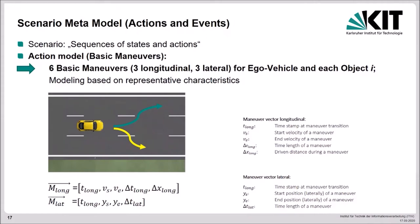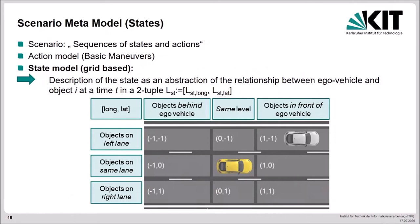In the past, many researchers have worked on modeling driving maneuvers. Based on polynomial models, the description is implemented using representative characteristics. The corresponding quantities such as start and end velocities of a maneuver are aggregated in a vector. Different actions or maneuvers in a scenario might lead to different states. States in a scenario context are more or less static scenes or we could also say snapshots in time. Here a simple grid-based state model is used. A scene or state as an abstract representation of the relationship between ego vehicle and an object i at the time t is described in a two-tuple, considering the longitudinal and lateral position in a virtual grid of an object relatively to our ego vehicle.